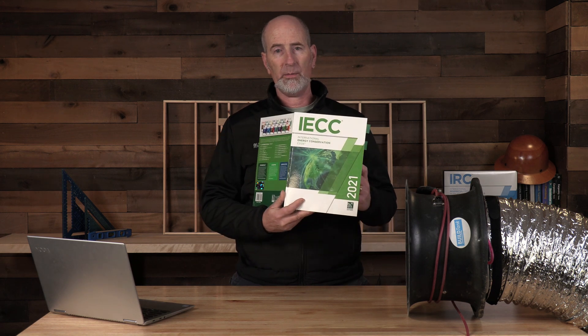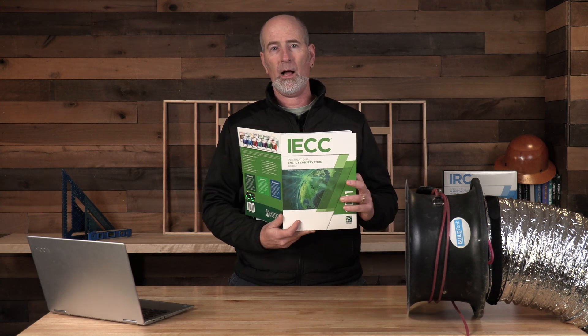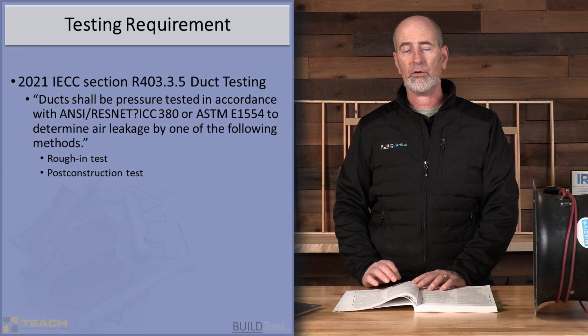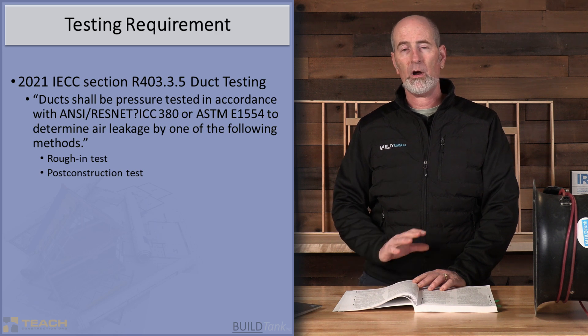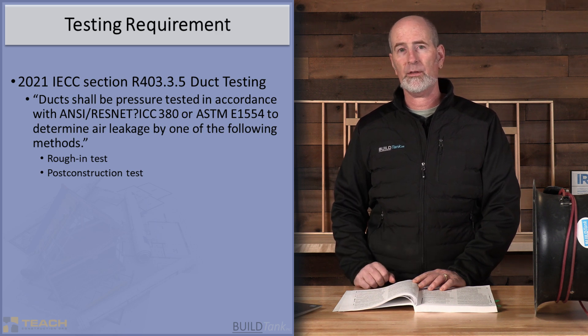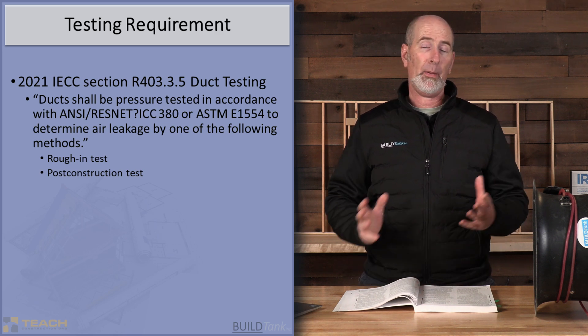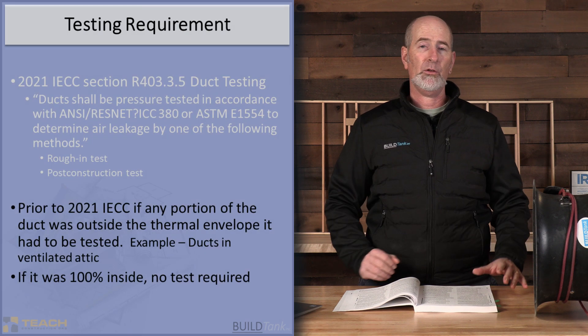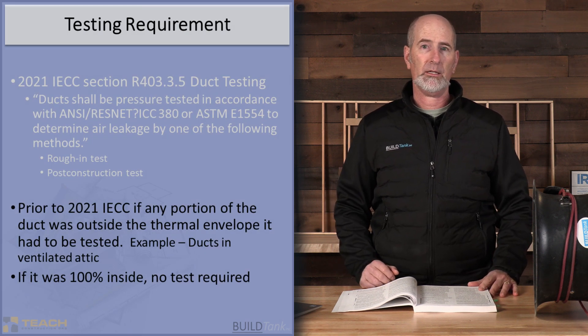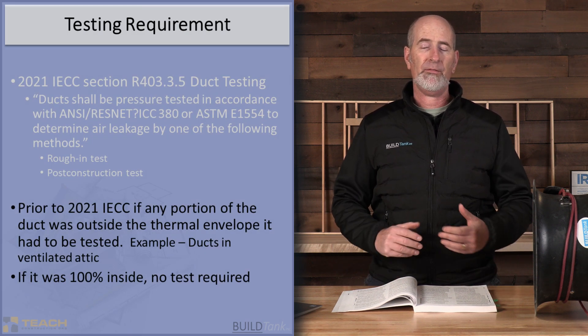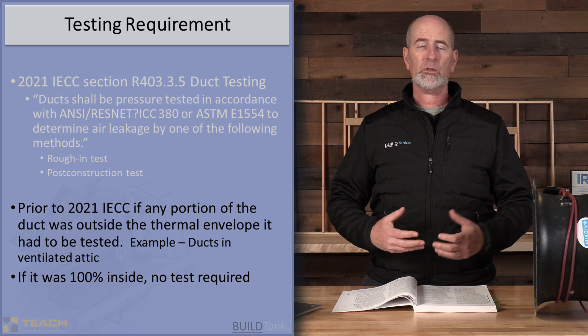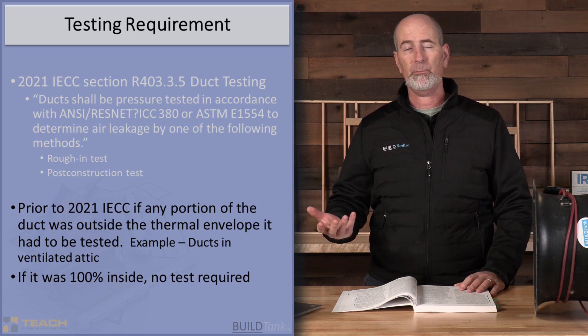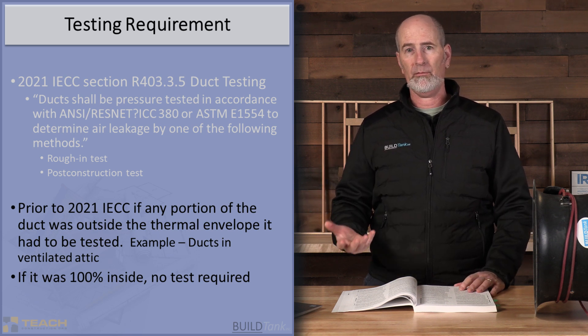Specifically, we're going to be talking about the 2021 IECC because new to the 2021 IECC is a requirement to test for total duct leakage regardless of where the ducts are located. In the past, you only had to test for total duct leakage if any portion of that duct was located outside the building thermal envelope.